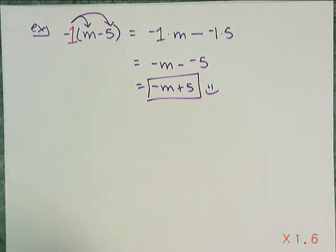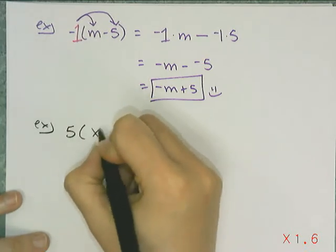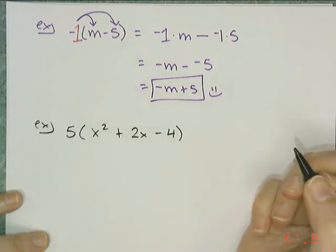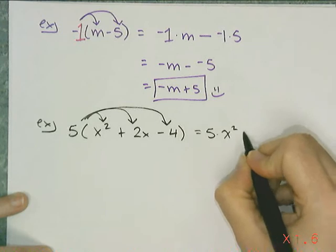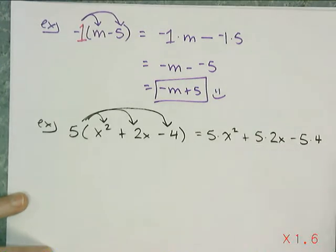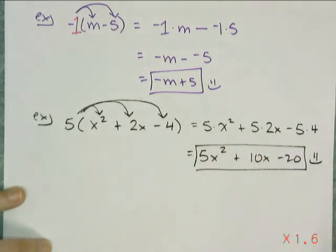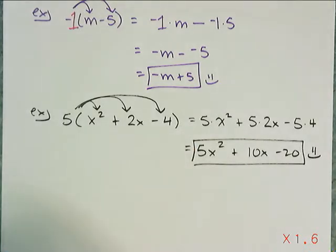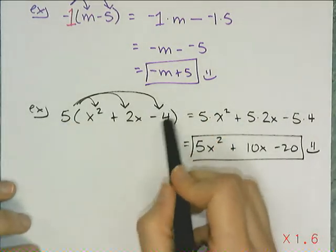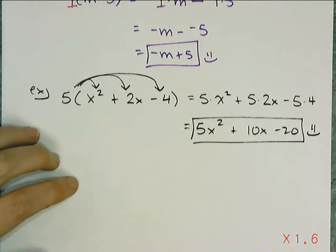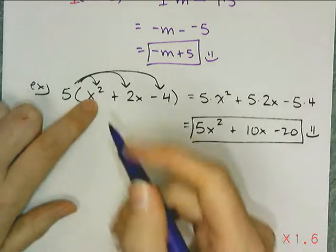You can distribute over more than just two terms. For example: 5 times x squared plus 2x minus 4. Just because there are three things inside doesn't mean I do anything differently — I just multiply three things. So I get 5 times x squared, plus 5 times 2x, minus 5 times 4, which simplifies to 5x squared plus 10x minus 20. The second most common mistake is forgetting to multiply one of the terms, so use arrows to make sure every term gets multiplied.